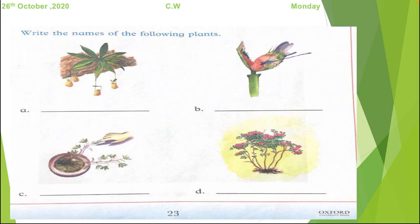Now move to another question. Write the names of the following plants. In the first picture, the A diagram, you can see there is a pitcher-like thing and the insects are sitting on them. So which plant is it?